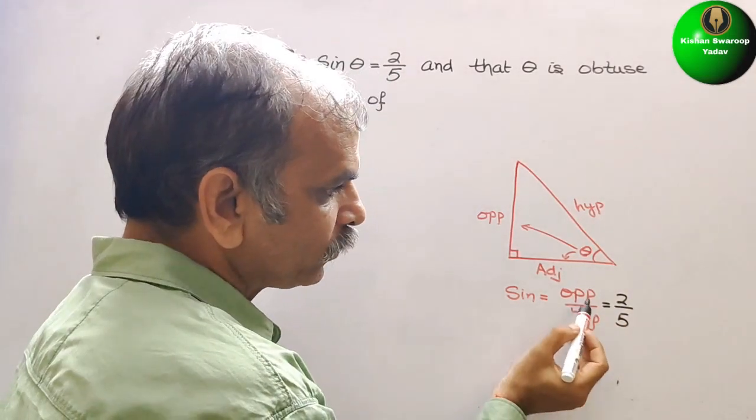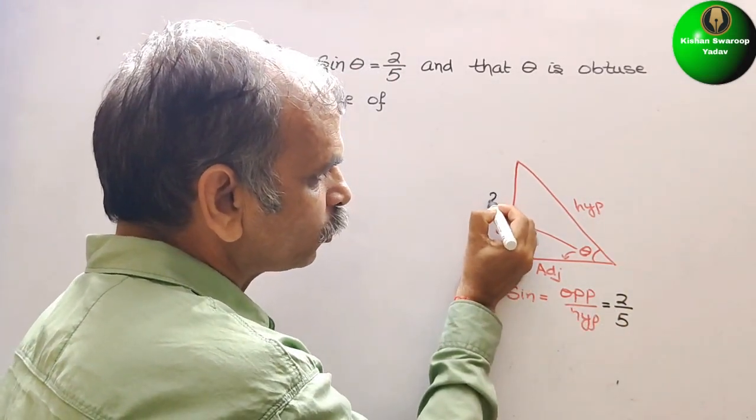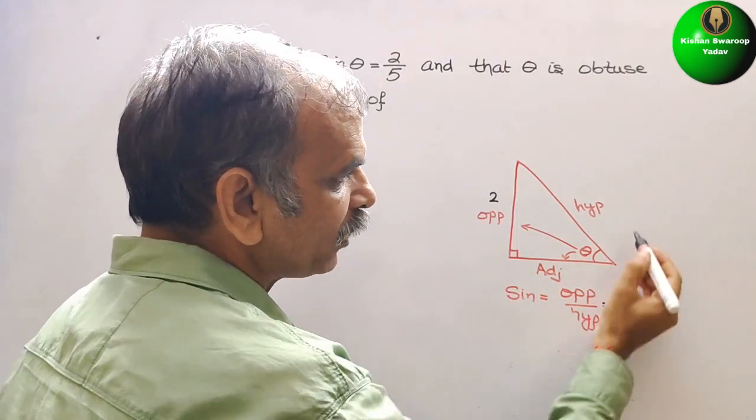So now, the opposite is 2, that means this is your 2. And the hypotenuse is 5.